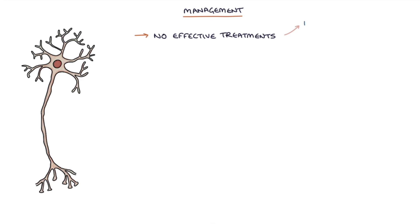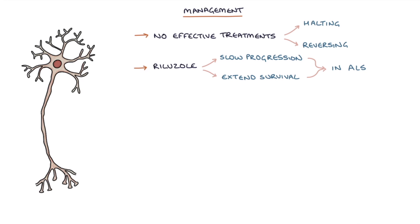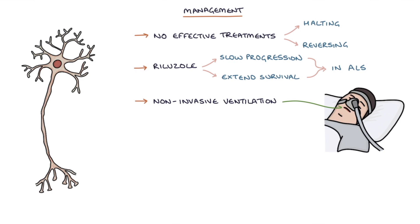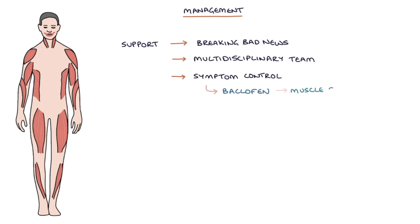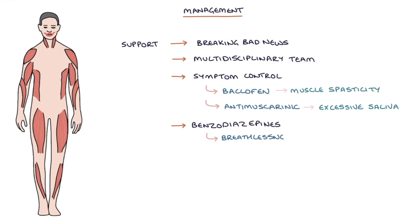There are no effective treatments for halting or reversing the progression of the disease. A medication called Riluzole can slow progression and extend survival by several months in patients with ALS. Non-invasive ventilation, or NIV, can support breathing when the respiratory muscles weaken. Management involves supporting the person and their family, breaking bad news effectively, multidisciplinary team input, symptom control — for example, baclofen for muscle spasticity and anti-muscarinic medications for excessive saliva. Benzodiazepines may help breathlessness worsened by anxiety, and advanced directives can document the patient's wishes for end-of-life care.